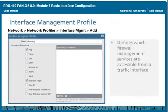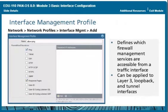By default, the out-of-band MGT port supports firewall management functions and services. Alternatively, you can apply an Interface Management Profile to a Layer 3 interface to enable it to carry management traffic. An Interface Management Profile protects the firewall from unauthorized access by defining the protocols, services, and IP addresses that an in-band firewall interface permits for traffic to the firewall. Because a Layer 3 interface resides in a security zone, you need to configure appropriate security policy rules to allow the management traffic. For example, you might enable ping but disable HTTP/HTTPS on the interface.